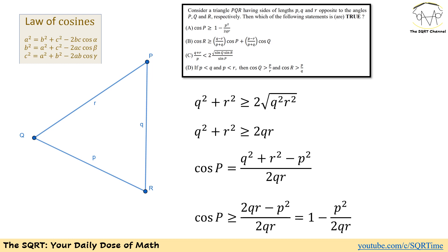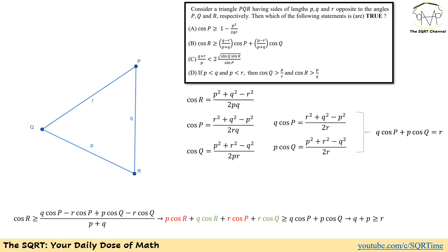So Case A is correct. Now consider the equality condition: we'd also need q + p ≥ r since in a triangle the sum of any two sides must be greater than the third side. The strict triangle inequality means equality cannot actually be achieved — if it were, P, Q, and R would be collinear. So the inequality in Case A holds strictly, and Case A is confirmed correct.